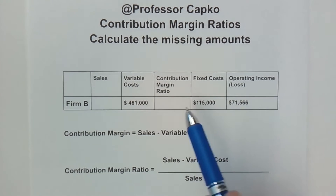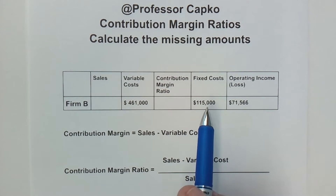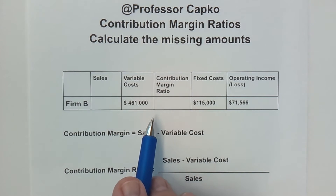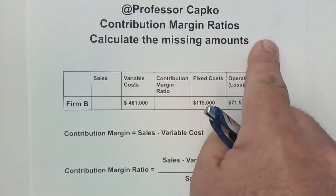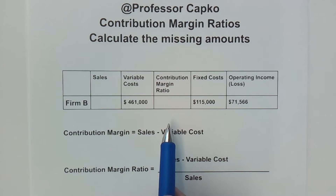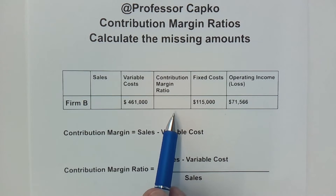I have done a prior video in which I found sales and variable costs, contribution margin, and fixed costs for multiple firms where some of the information was missing and I showed the process all at once. If you missed that video I've got it linked up here for you — take a look at that. In this video I'm going to break it down in more detail, showing you step by step how to get the missing information so it'll be easier to solve this type of problem.